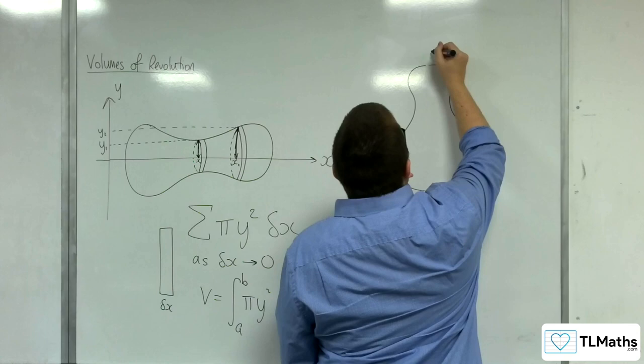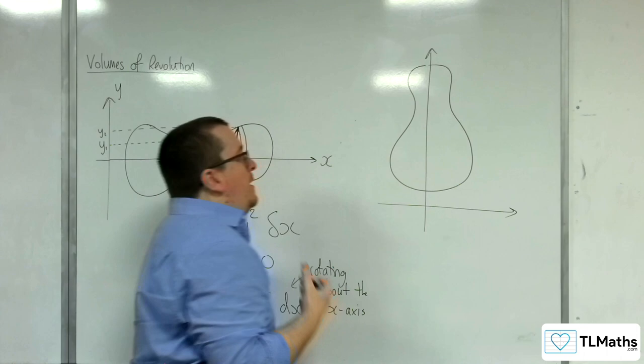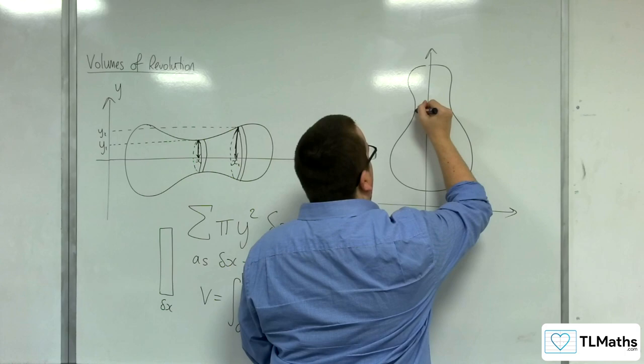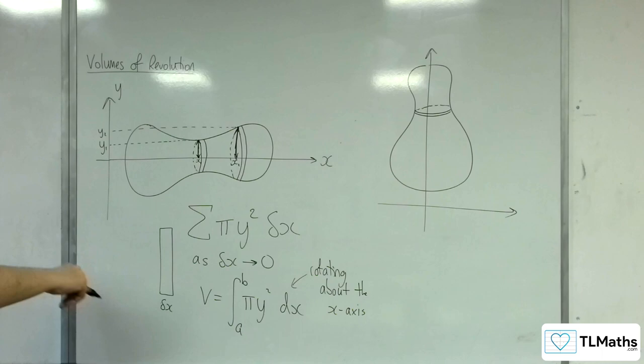So, here's now my y-axis, and here's my x-axis. Now, if I take a horizontal slice through, rather than the vertical one, see, I didn't get it through the middle.